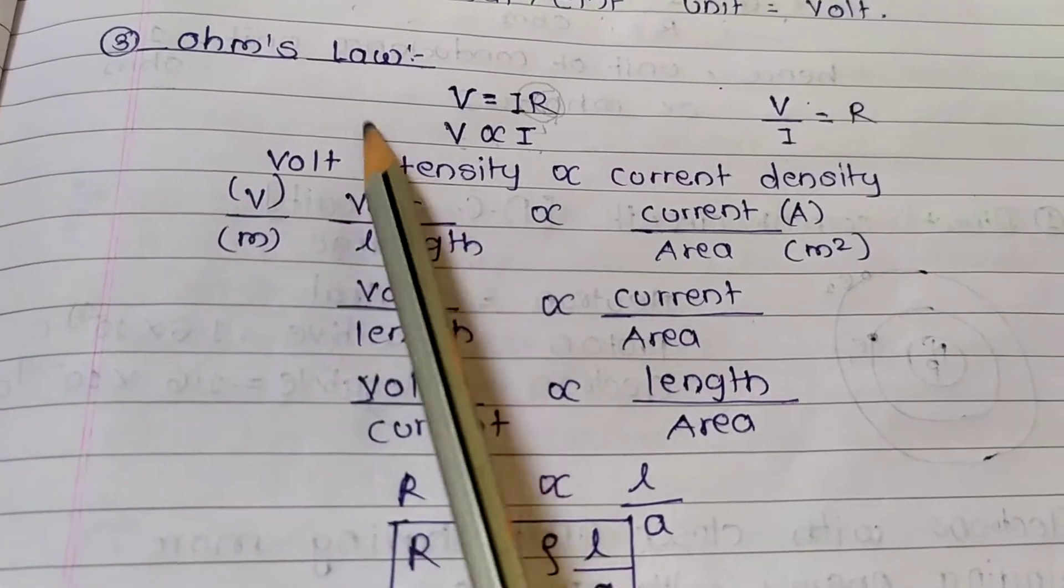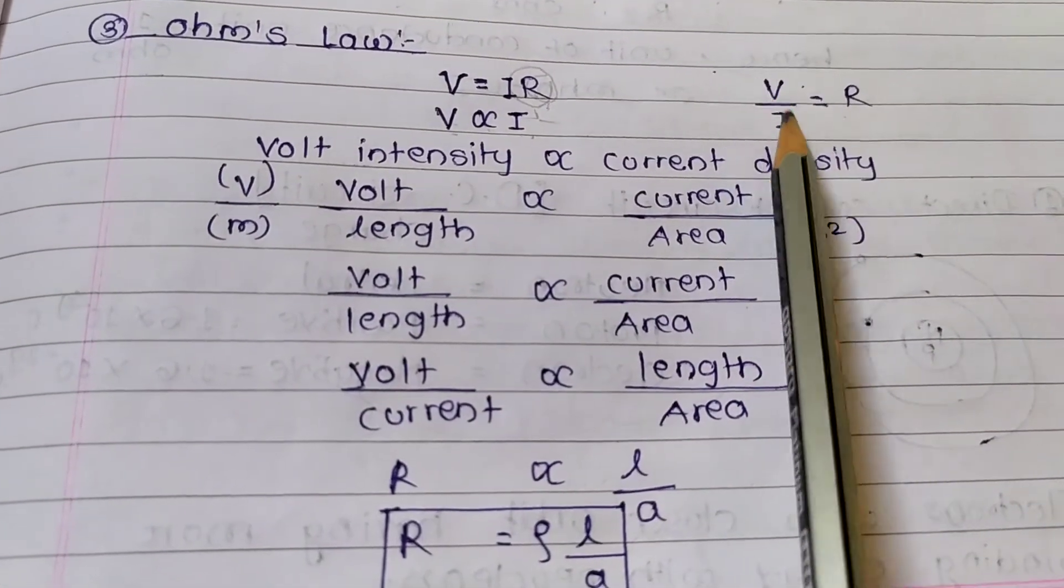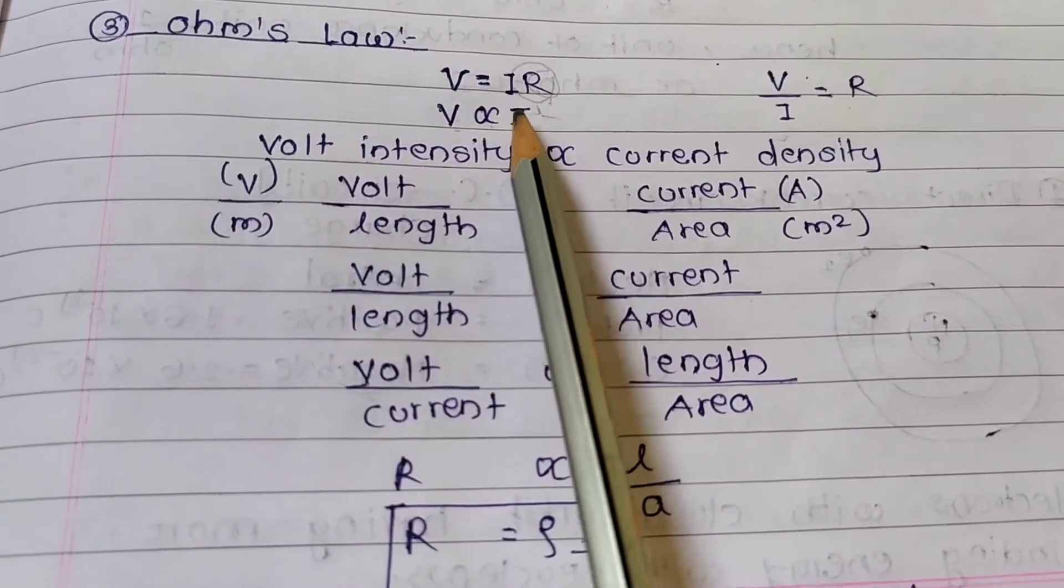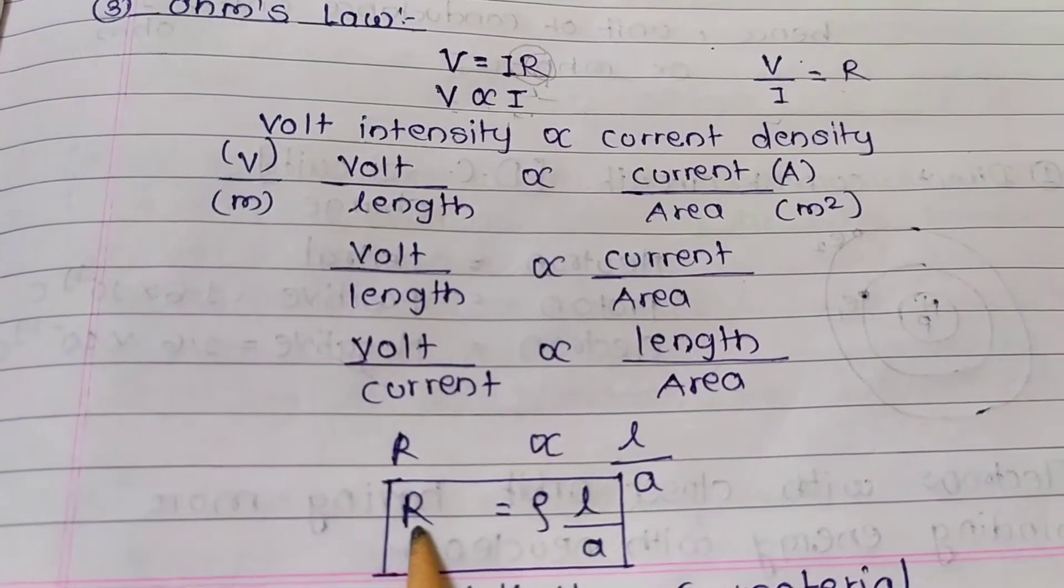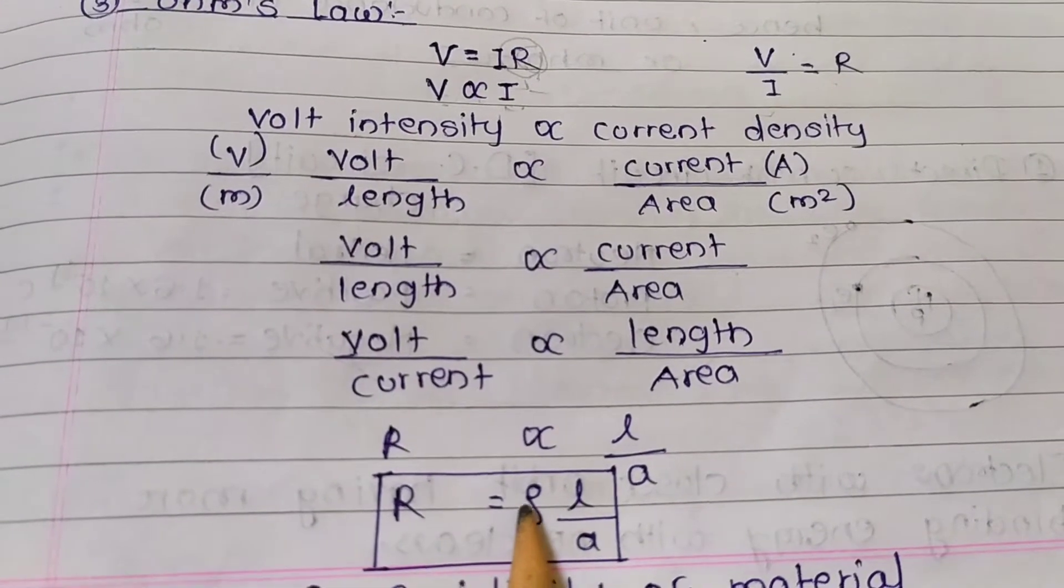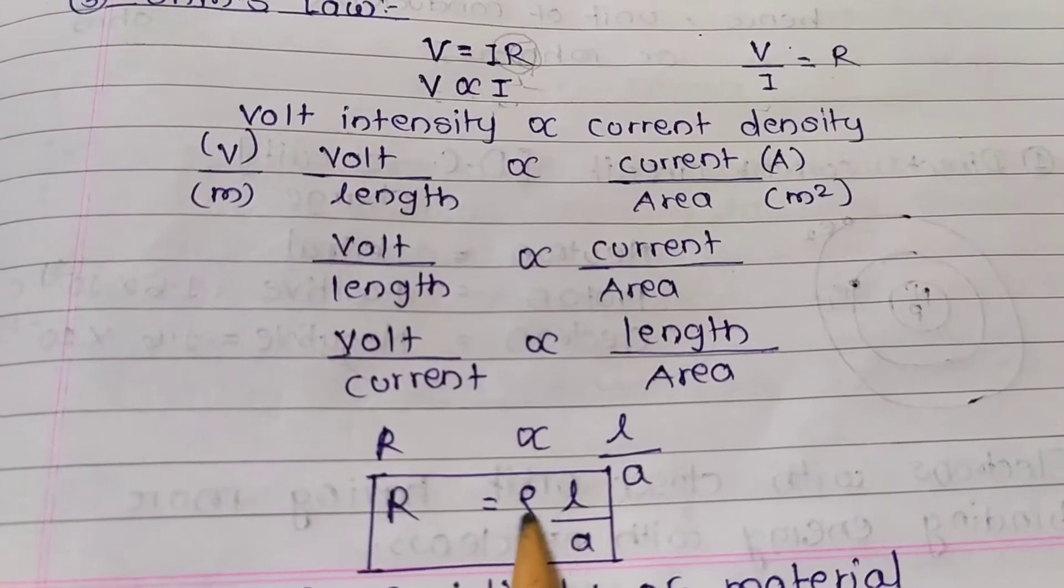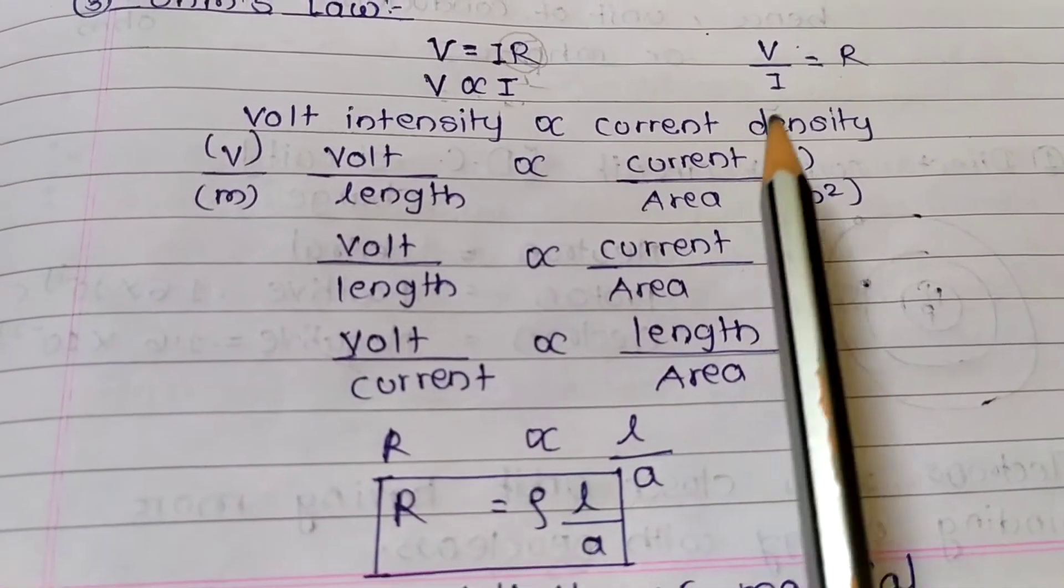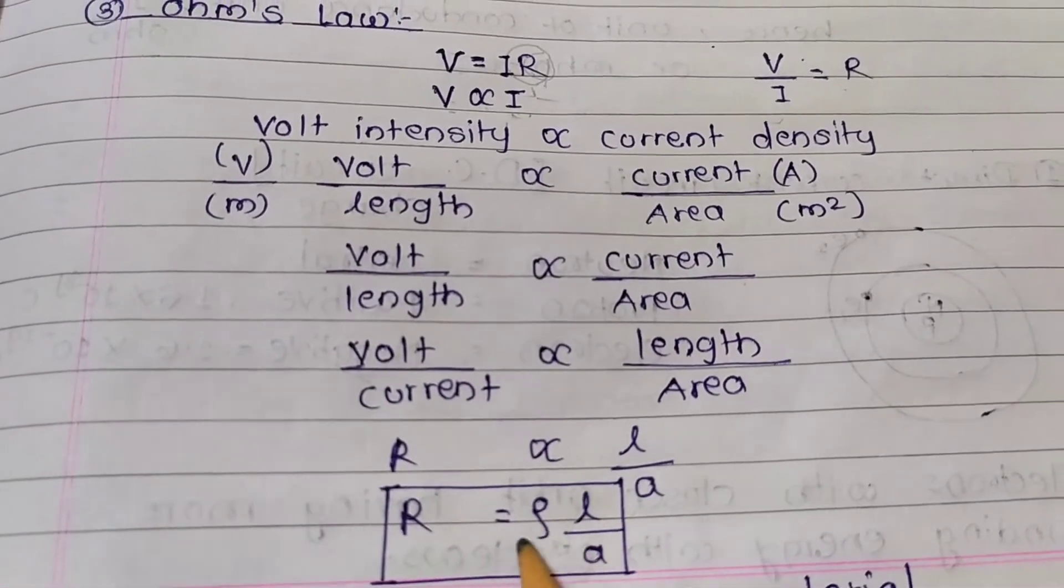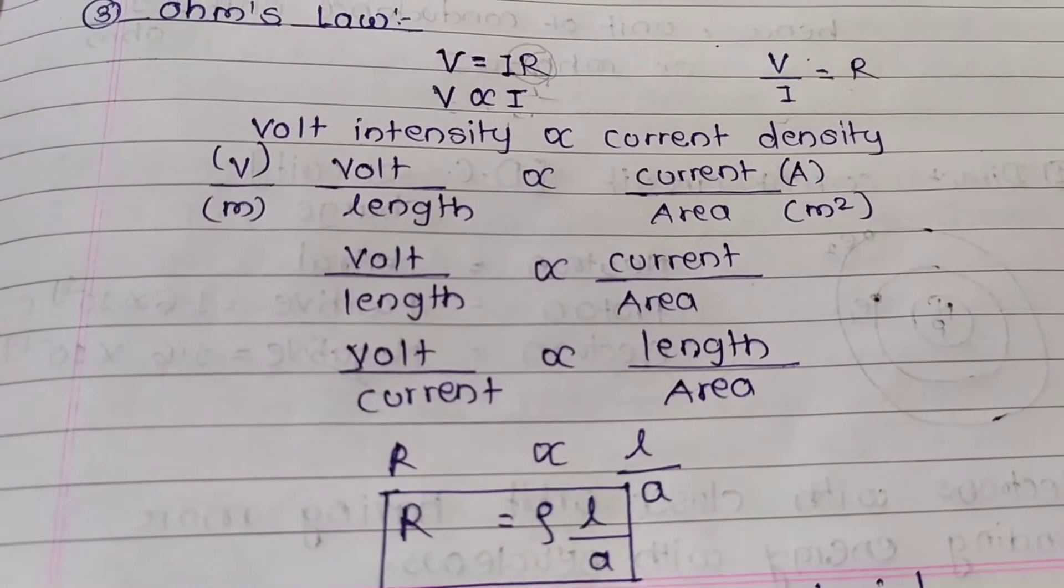Ohm's law: V = IR. Then R = V/I. V is directly proportional to I. And resistance R = ρL/A. These three, four equations are important for exams.